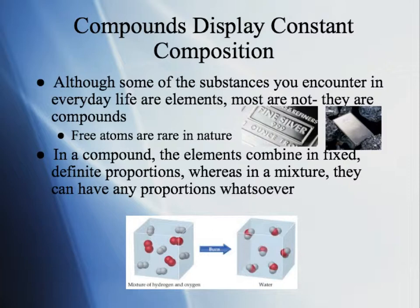In compounds, the elements combine in fixed, definite proportions. Whereas in a mixture, they can have any proportions whatsoever. Everyday life is made up of both compounds and mixtures — so what's the difference? Compounds are elements that have reacted together in definite, fixed proportions. For example, the compound water is always H2O.